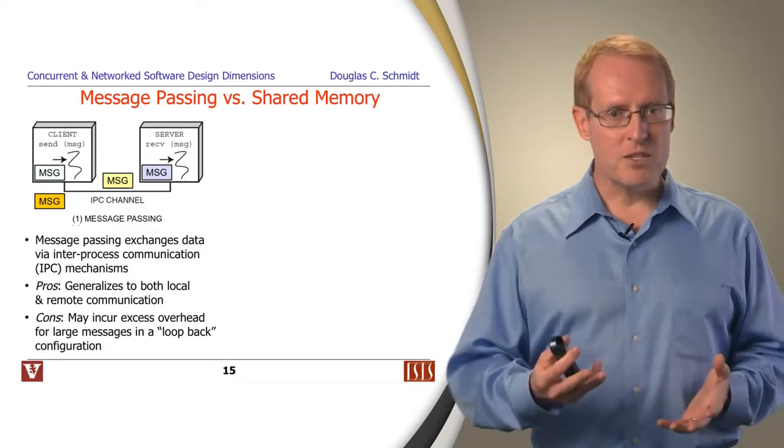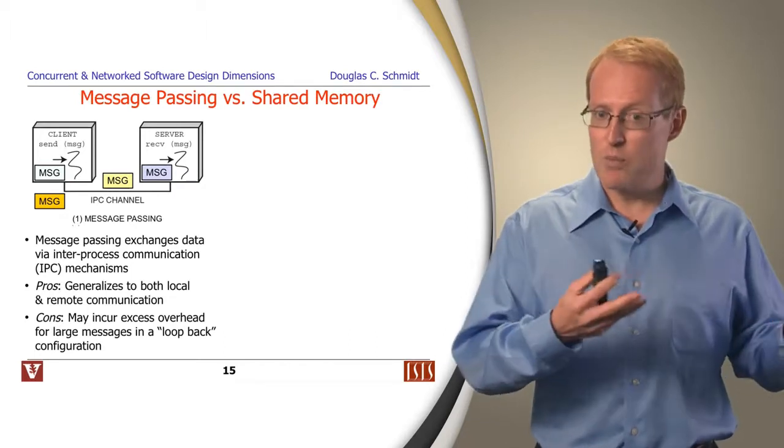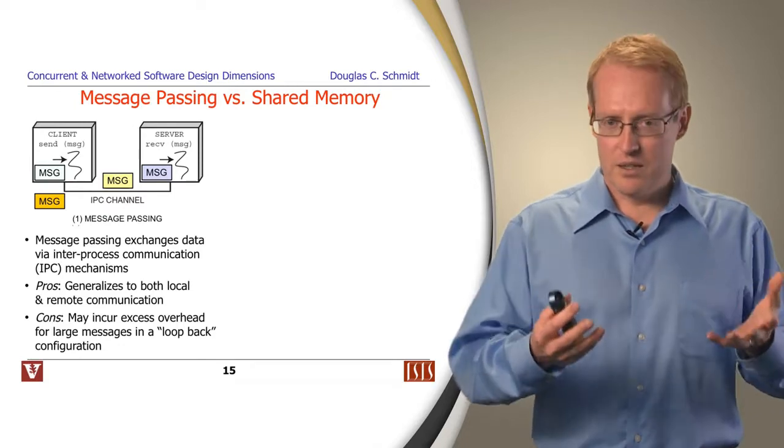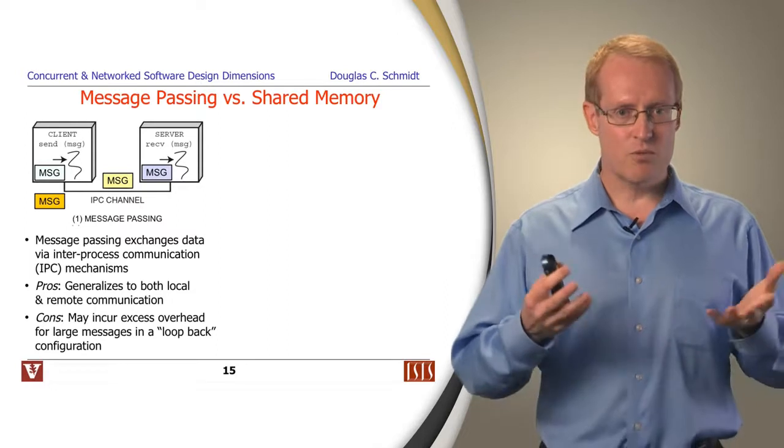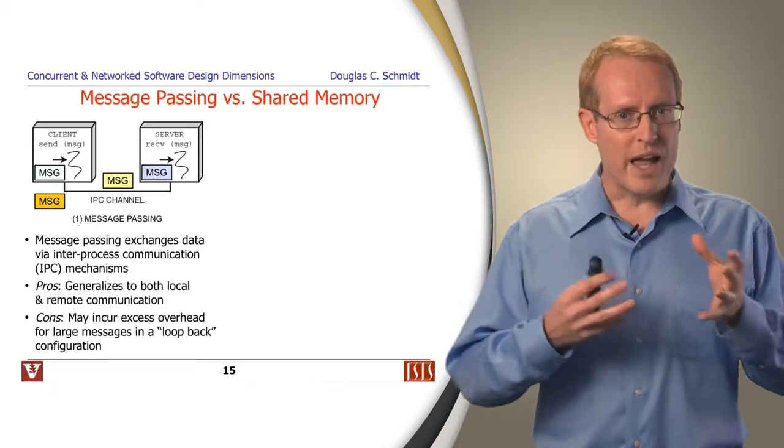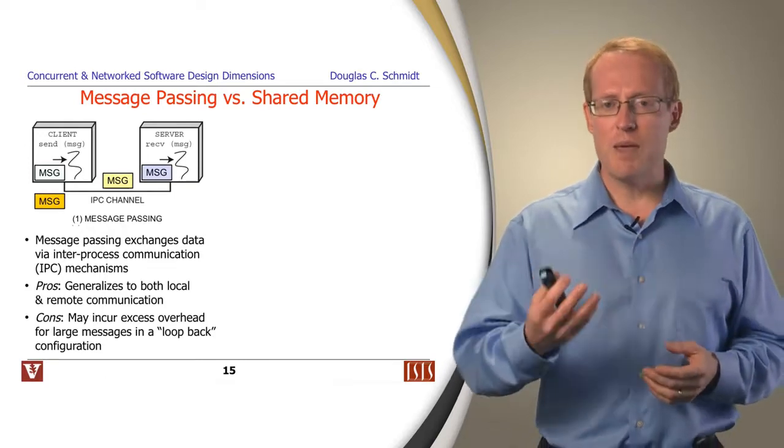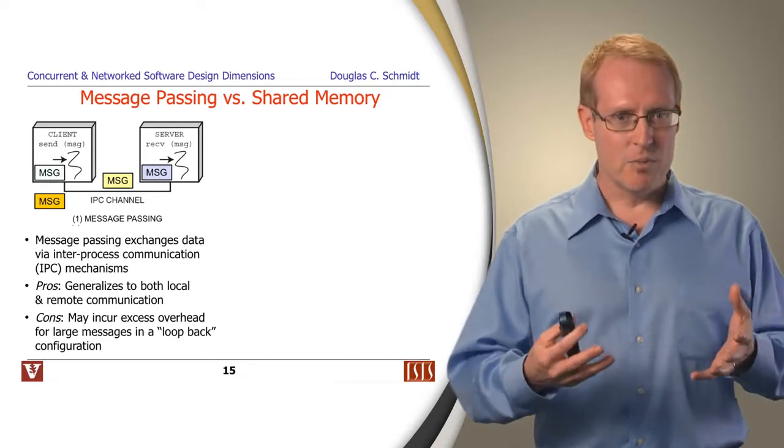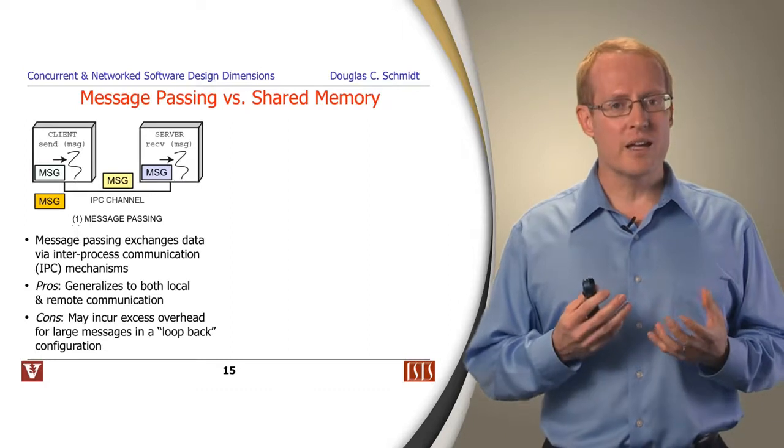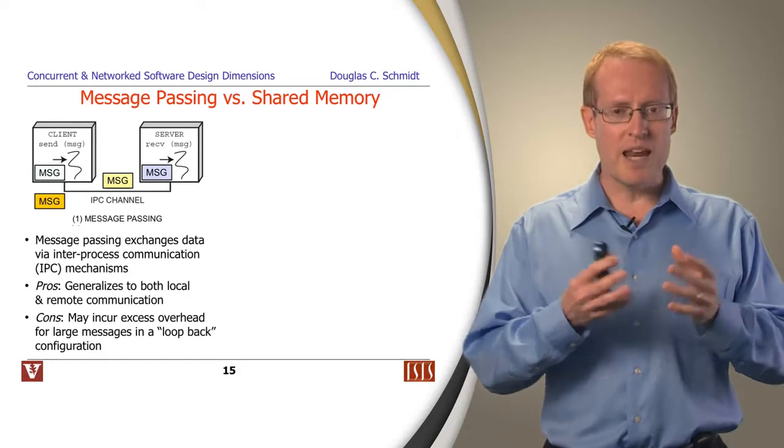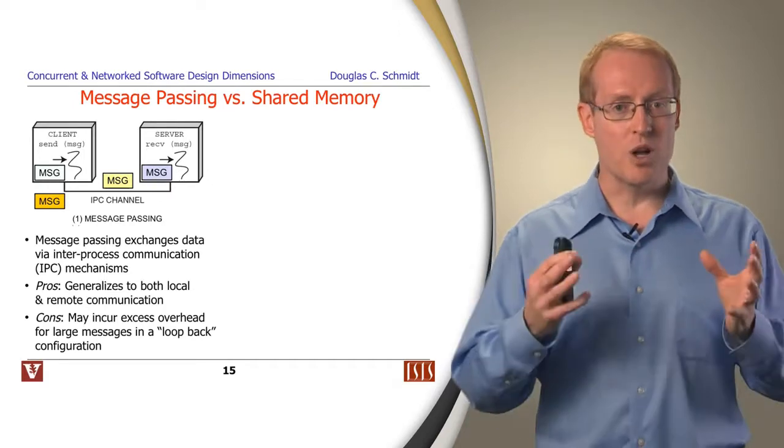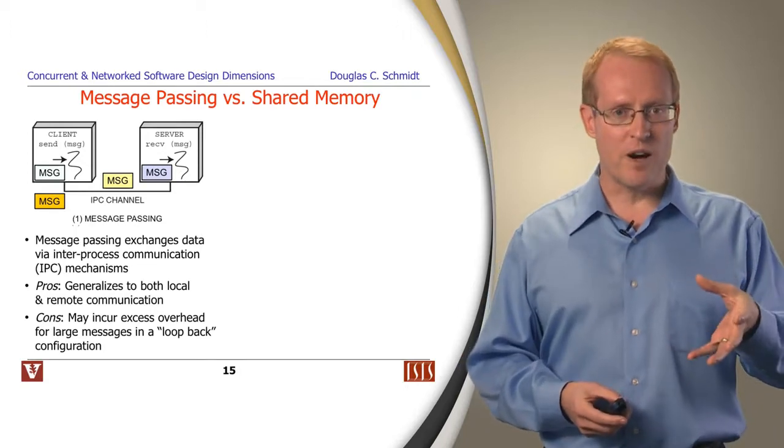Yet another dimension has to do with message passing versus shared memory. Message passing, which is what we've been talking about most of the discussion to this point, involves exchanging data via inter-process communication mechanisms, things like pipes, Unix domain sockets, sockets, internet sockets, and so on. The good thing about using the message-oriented exchange approach is that both local and remote communication looks and feels more or less the same. There may be some additional error conditions you have to check for and remediate for the remote case, but your software will look about the same in both cases. The downside is that you may end up incurring extra unnecessary overhead for situations where you're communicating between processes in the same machine through some kind of loopback mode, some kind of channel that occurs through the operating system kernel on the same device, and that may incur a fair amount of overhead, especially as the messages grow in size.